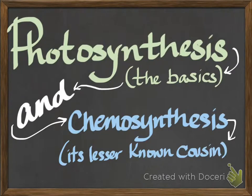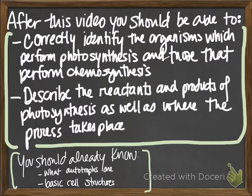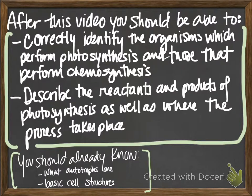Hi, it's Moser with a quick tutorial on photosynthesis — the bare-bones basics — and chemosynthesis, its lesser-known cousin. After this video, you should be able to correctly identify the organisms that perform photosynthesis as well as those that perform chemosynthesis, and describe the reactants and products of photosynthesis as well as where the process takes place. You already need to know what autotrophs are, and you should have some knowledge of basic cell structures.